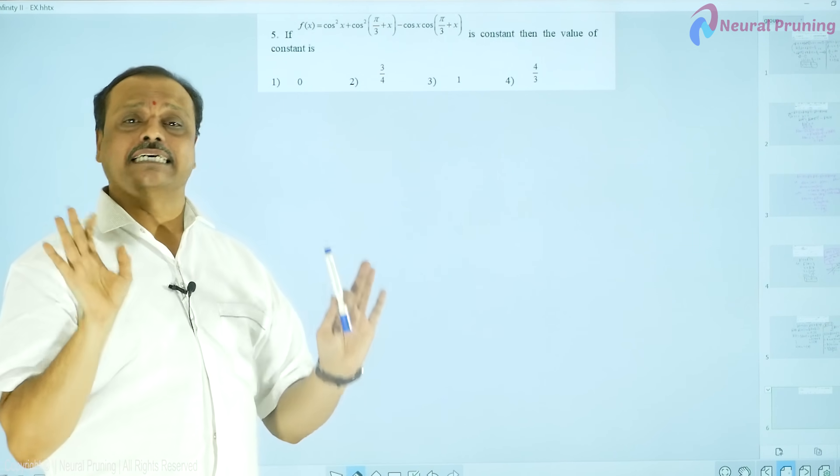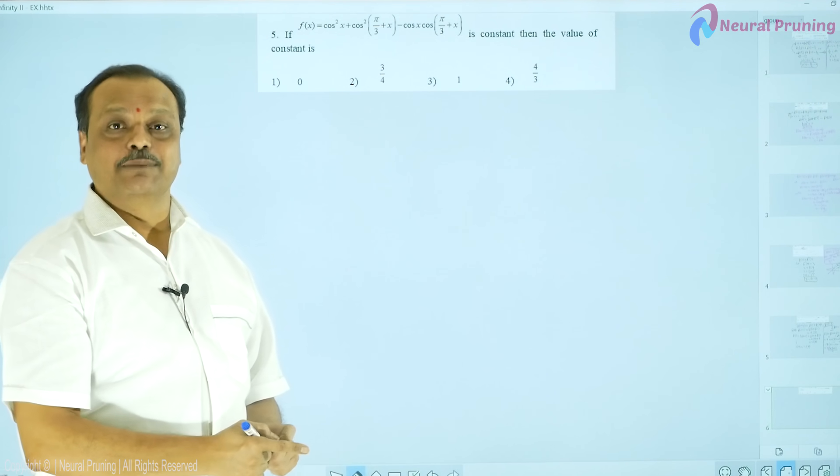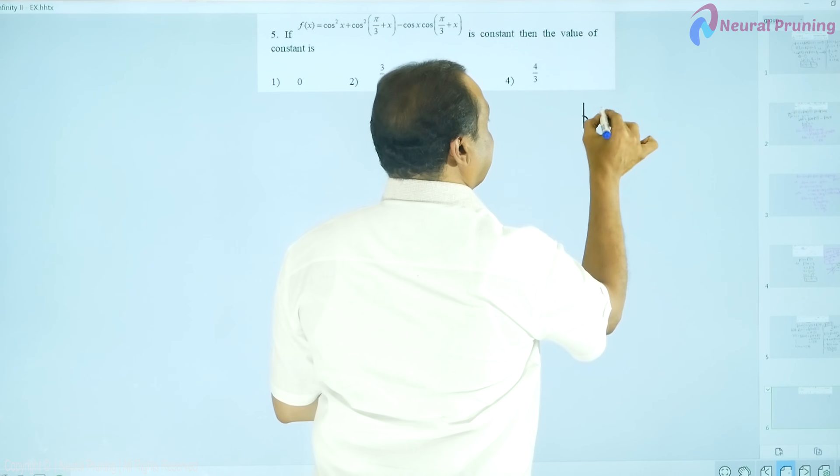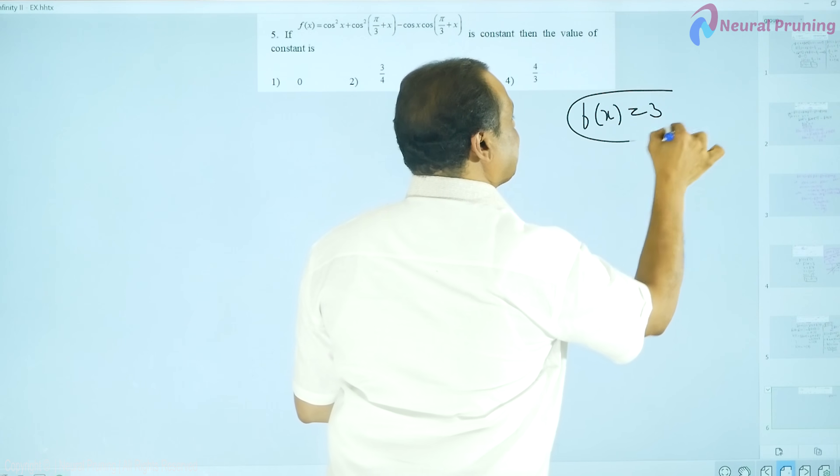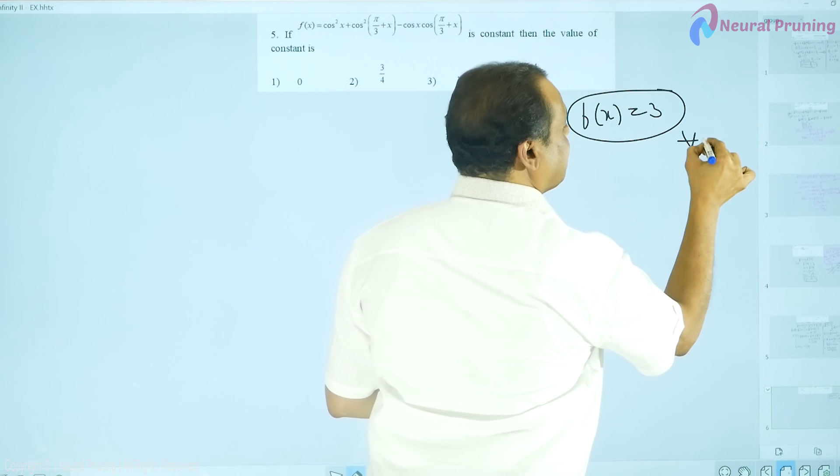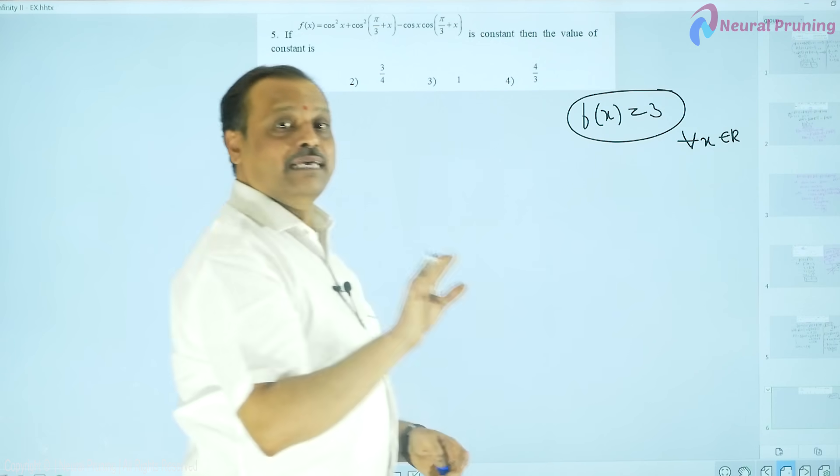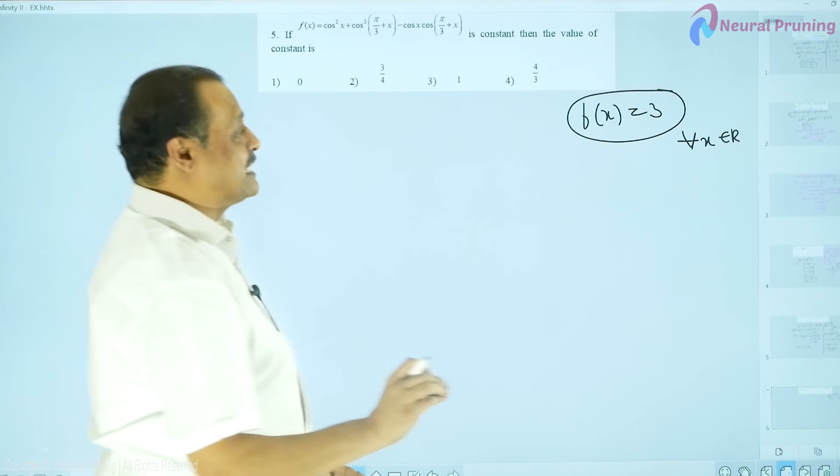This is the simplest example. If you know what is a constant function, the prerequisite for this example is constant function. What do you mean by a constant function? Whenever I write f of x is equal to 3, what is the meaning of this particular statement? For all x that belong to R, f of x remains same as 3. y value remains same as 3. This prerequisite must be known.